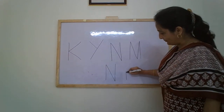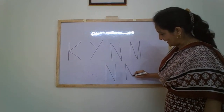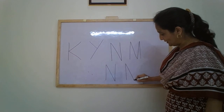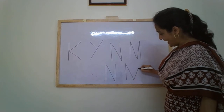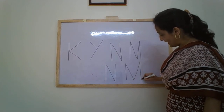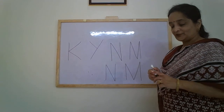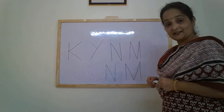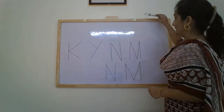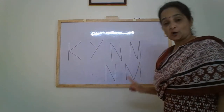Again: up one, down two, up three, down four. So these are the letters that we have learned in the month of October.